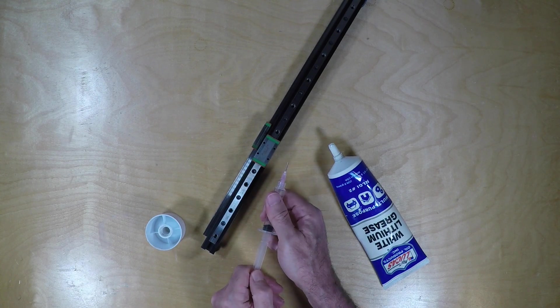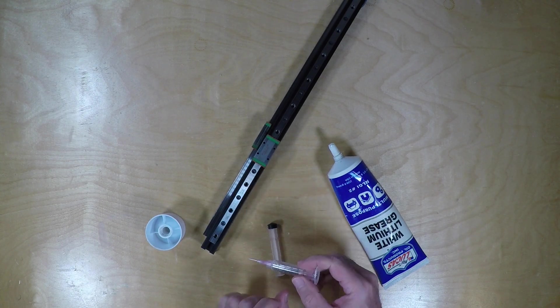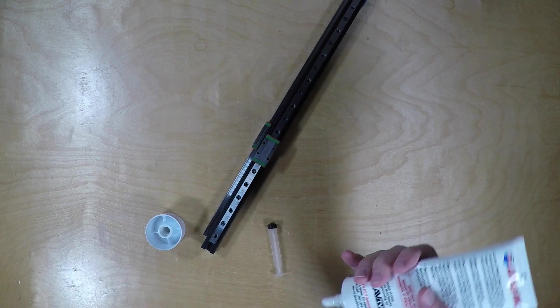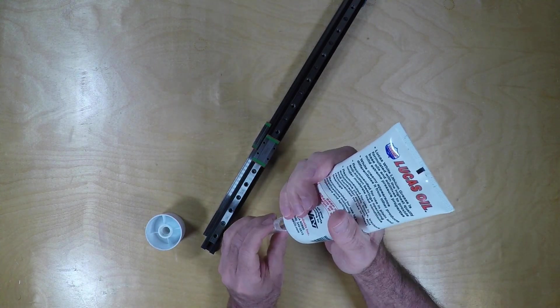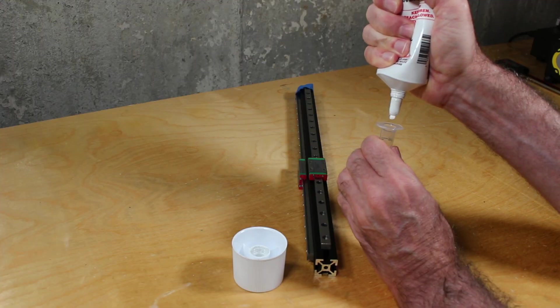To prepare, we simply open the syringe, take our tube of grease, and start to squeeze.